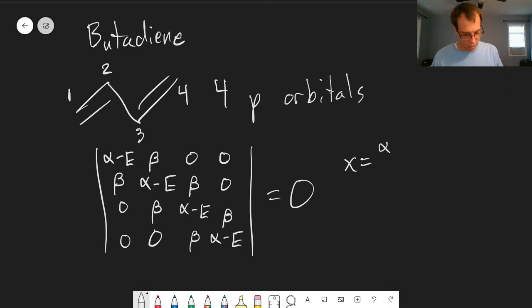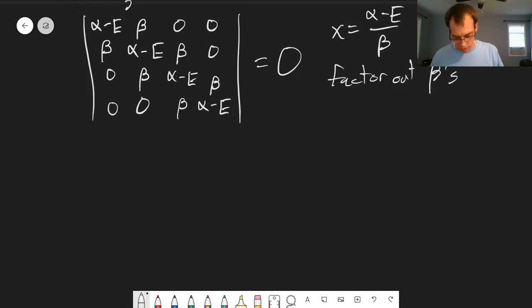Now we can simplify this slightly. We'll let x equal alpha minus E divided by beta, and factor out all of the betas. That'll give us a determinant in terms of x's and ones, and zeros.